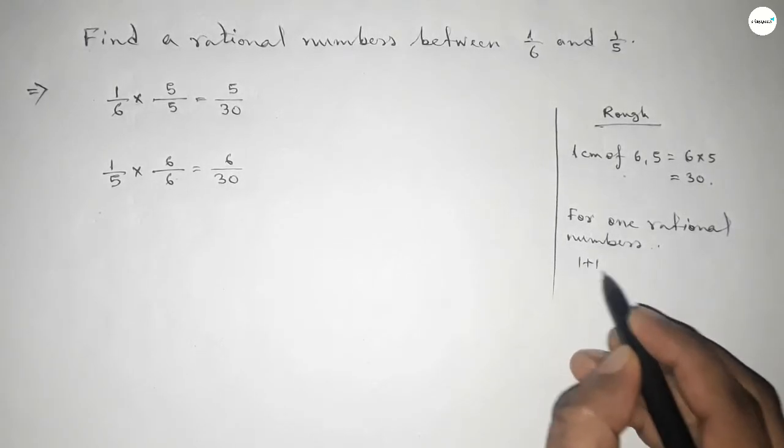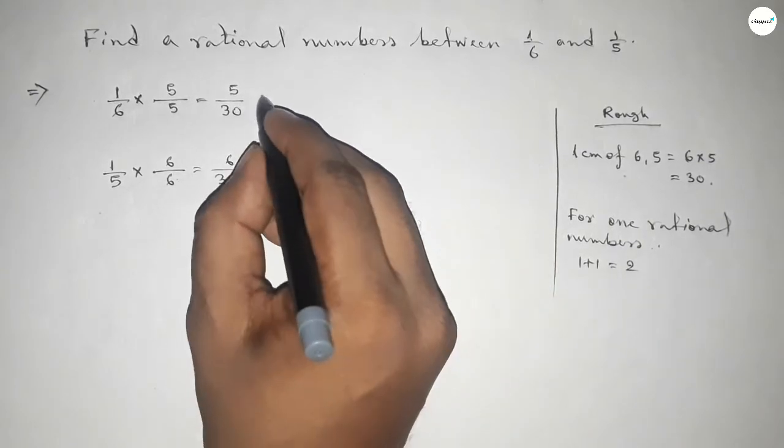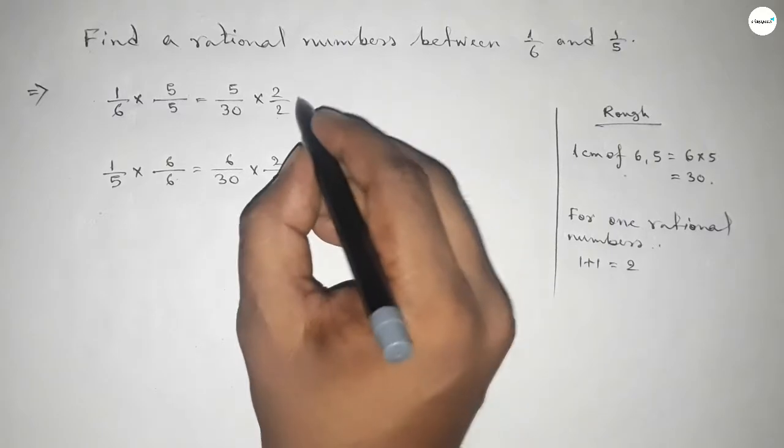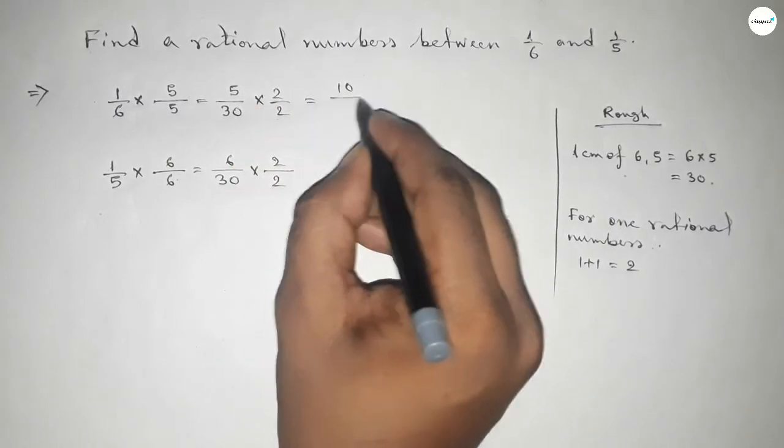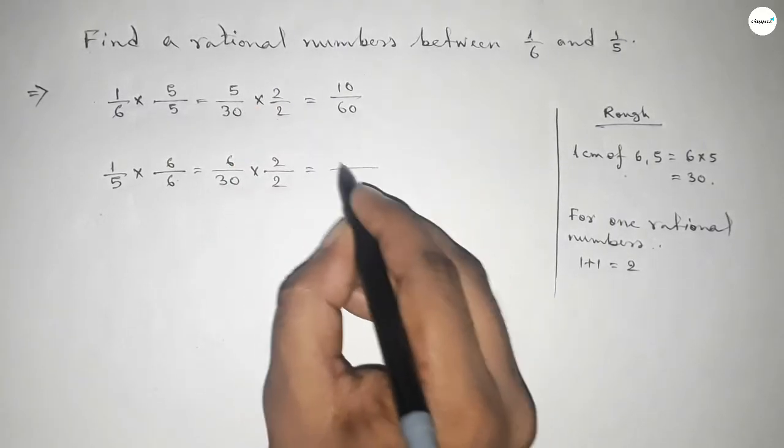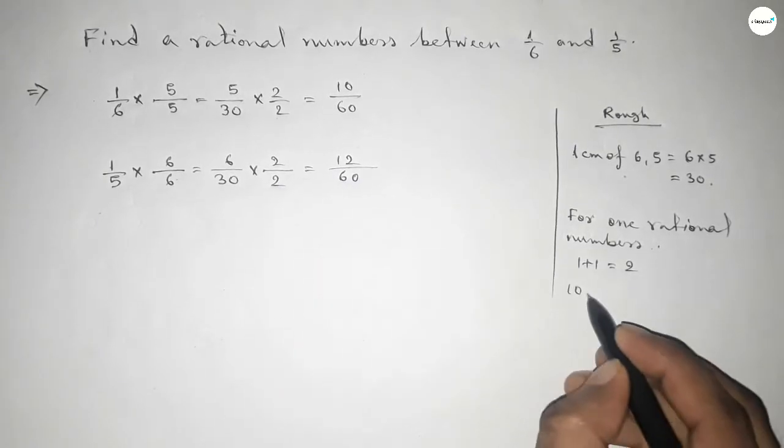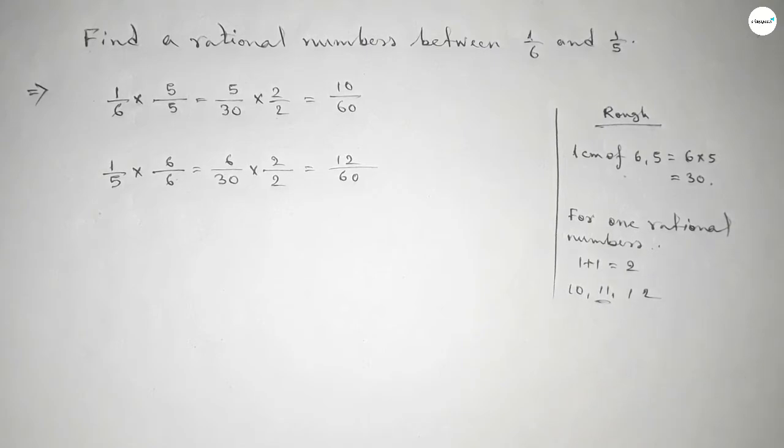We should multiply both numbers by 2, so up and down by 2. Okay, now this is 10/60 and this is 12/60. Now between 10 and 12 we can get one natural number.